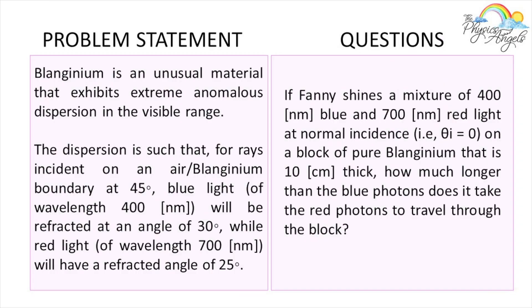So this is the problem we're going to be working on today. No picture this time. Blindgenium — however you pronounce it — is an unusual material that exhibits extreme anomalous dispersion in the visible range. The dispersion is such that for rays incident on an air-blindgenium boundary at 45 degrees, blue light refracts at 30 degrees while red light refracts at 25 degrees. Finally, she shines a mixture of blue and red at normal incidence on a block of pure blindgenium that is 10 centimeters thick.